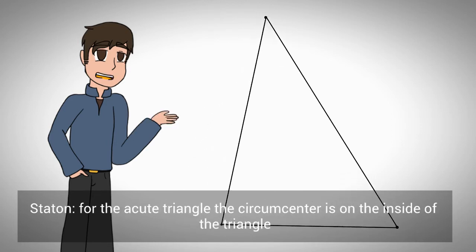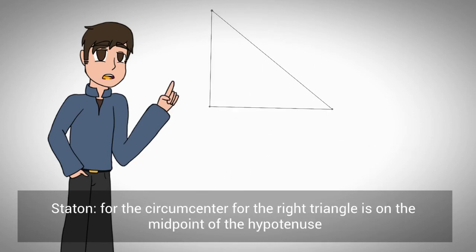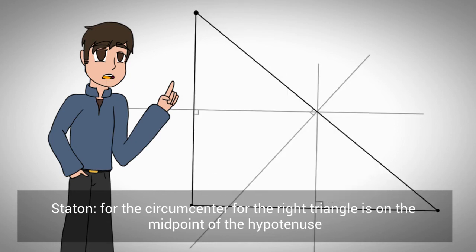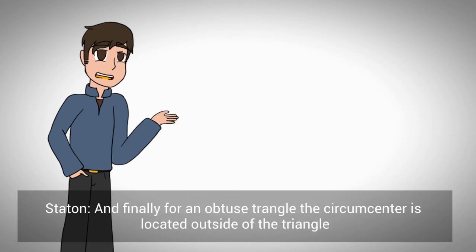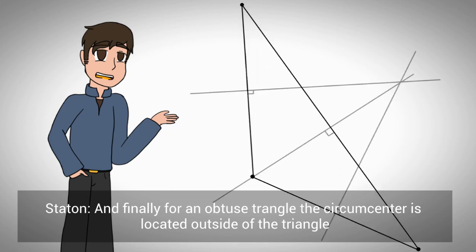For the acute triangle, the circumcenter is on the inside of the triangle. For the right triangle, the circumcenter is located on the midpoint of the hypotenuse. And finally, for an obtuse triangle, the circumcenter is outside the triangle.